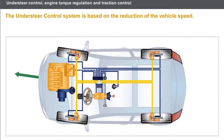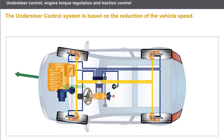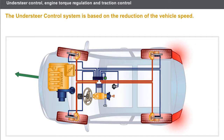Braking of more than one wheel reduces the speed of the vehicle whilst retaining improved stability. The reduction in the engine torque facilitates the weight transfer and therefore the re-establishment of front axle grip. The deceleration obtained during regulation causes the stop lights to come on.